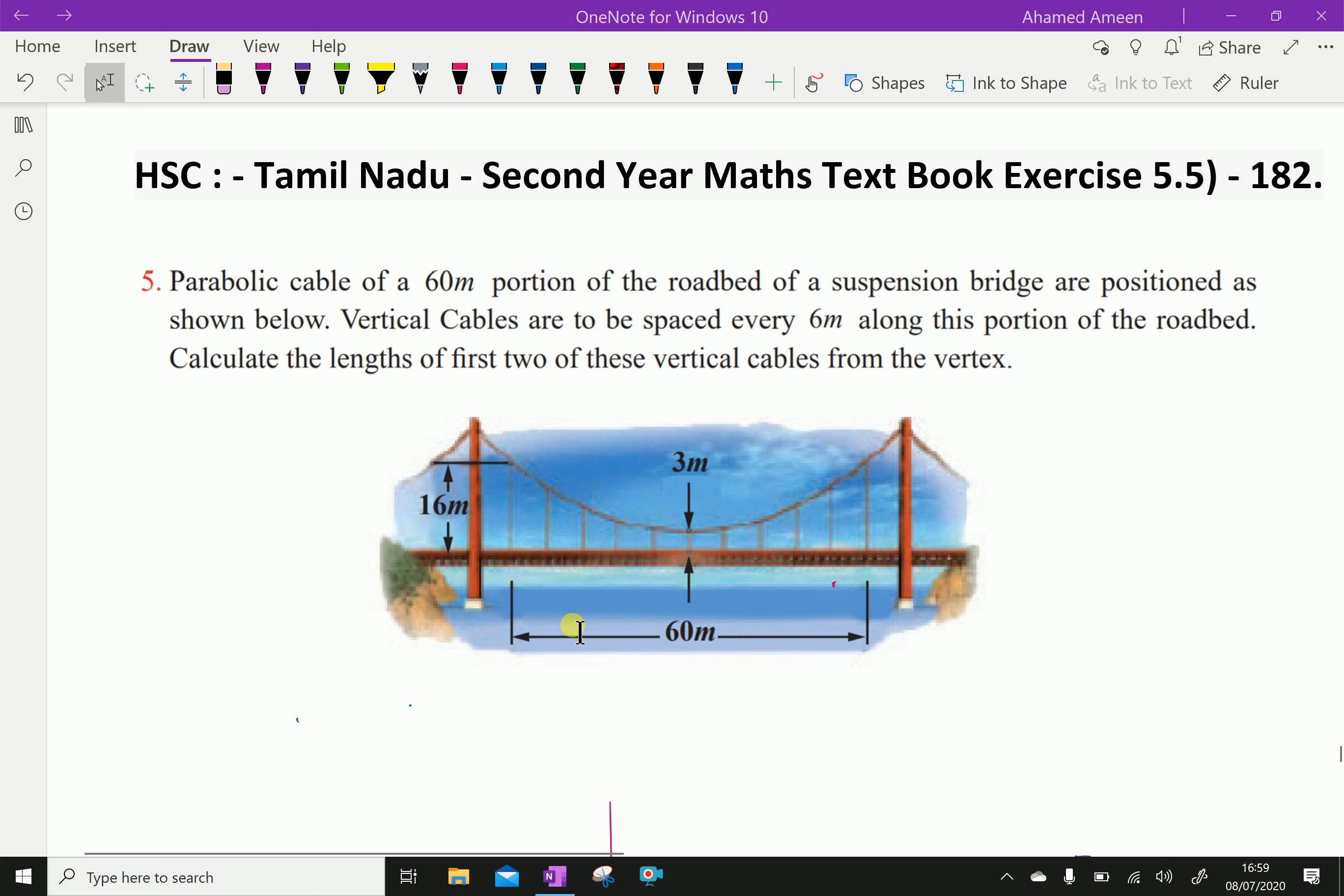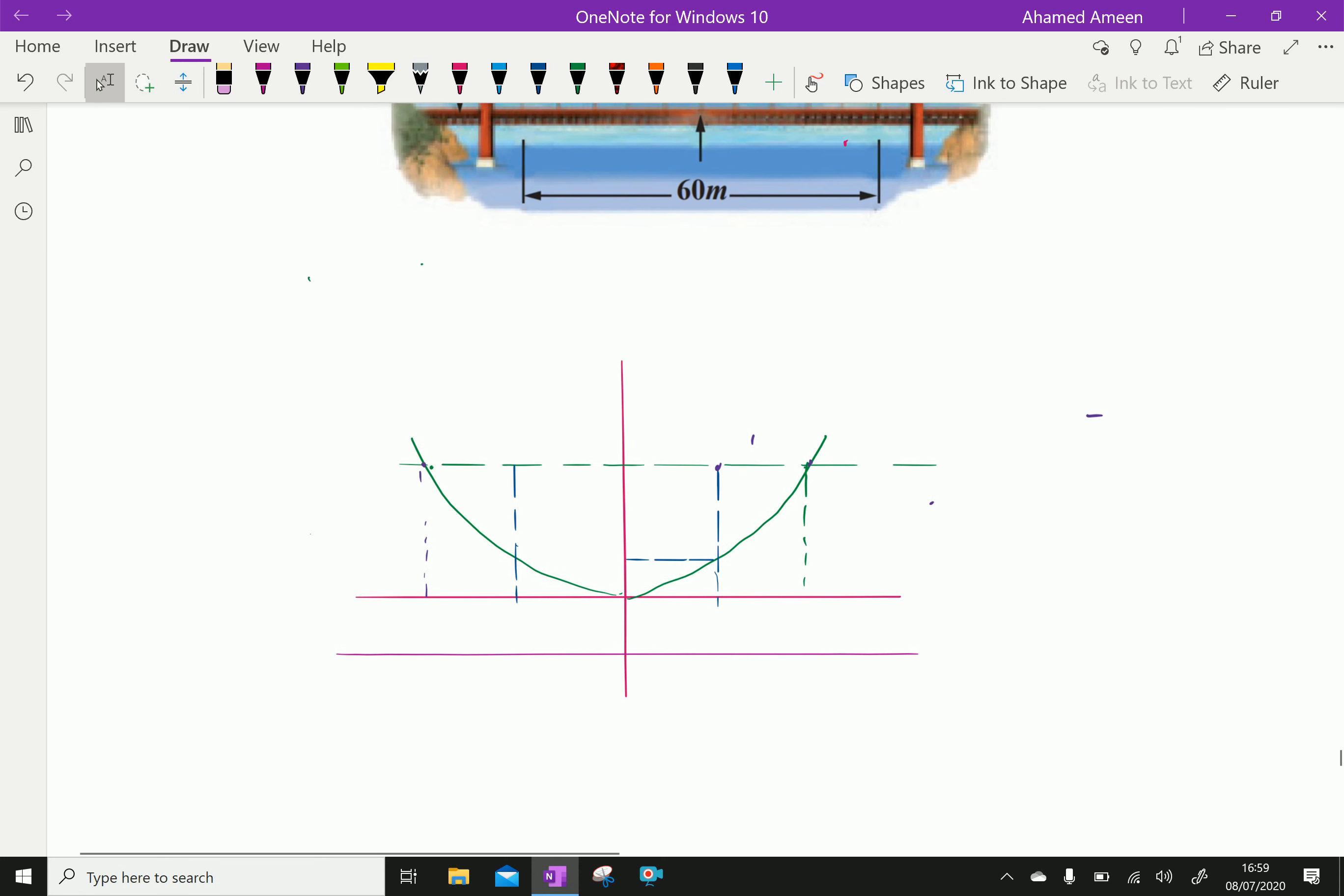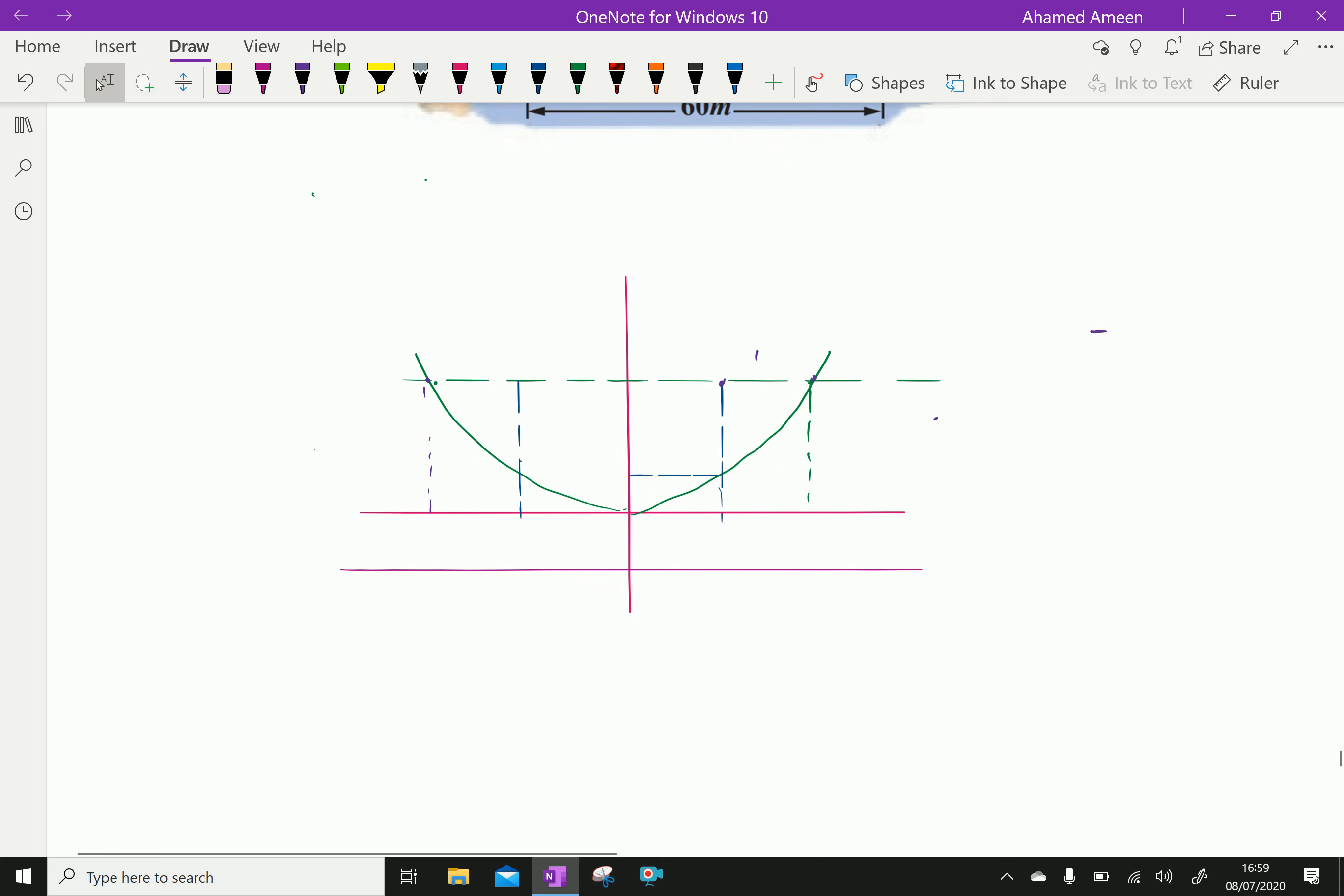Here, look at this figure. This span is 60 meters. Now, let this be the origin. Here, 3 meters. Let this point be minus 30 and 16 at this point. And here, from this is 30, from here also 30 meters.